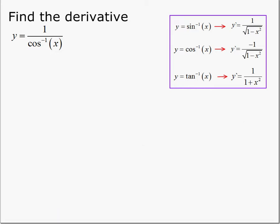The following example asks to find the derivative of 1 over cosine inverse of x. Be very careful here. This is not the same as 1 over 1 over cosine. So this is not cosine of x. Do not do that.